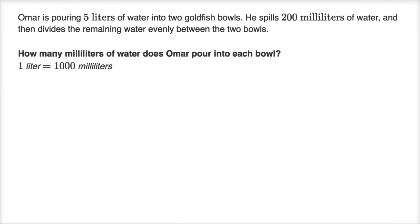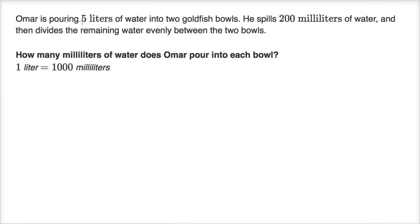Omar is pouring five liters of water into two goldfish bowls. He spills 200 milliliters of water and then divides the remaining water evenly between the two bowls. How many milliliters of water does Omar pour into each bowl? So we want our answer at the end in milliliters. Let's just convert the amount that he starts with into milliliters. So he starts with five liters. So how many milliliters is that going to be?